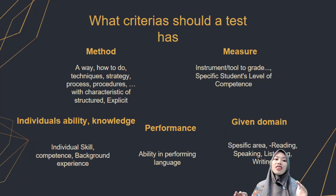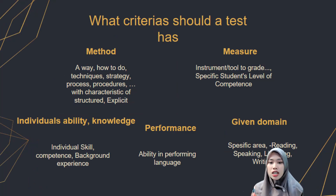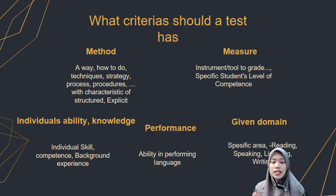Method is a way — the techniques, strategy, process, and procedures — with an abstract characteristic. Measure is the instrument or tool to assess a specific student's level of competence. Individual's ability and knowledge include individual skill, competence, and background experience. Performance refers to the ability in performing language.